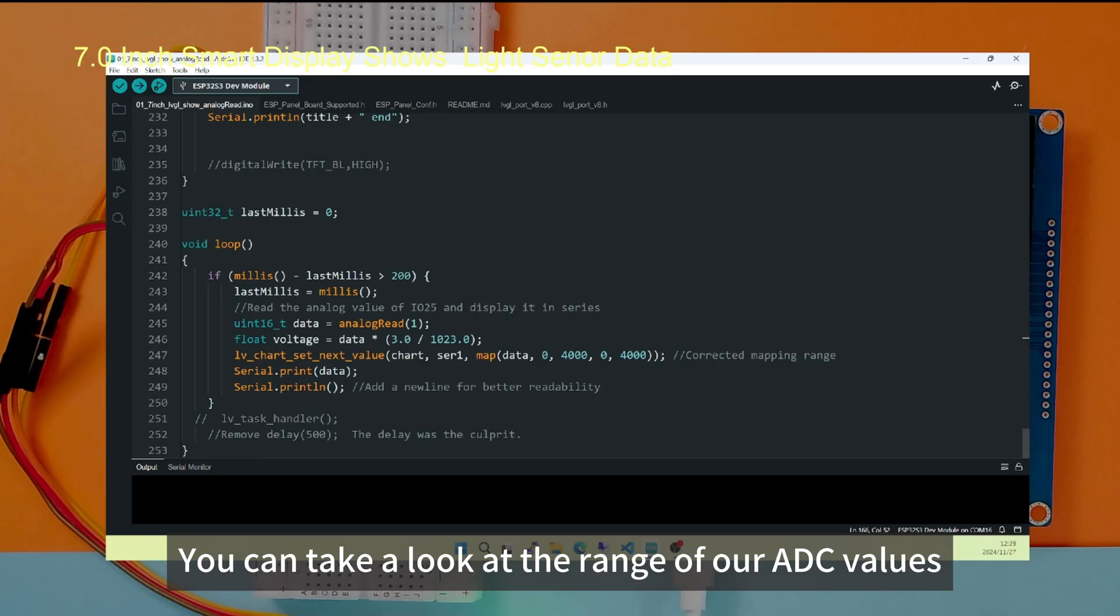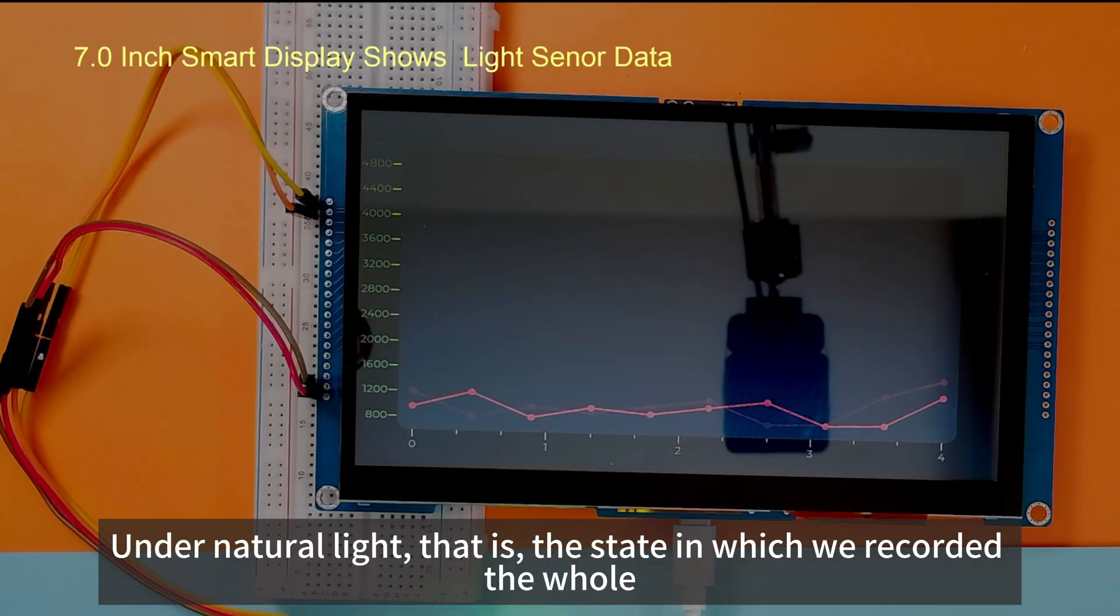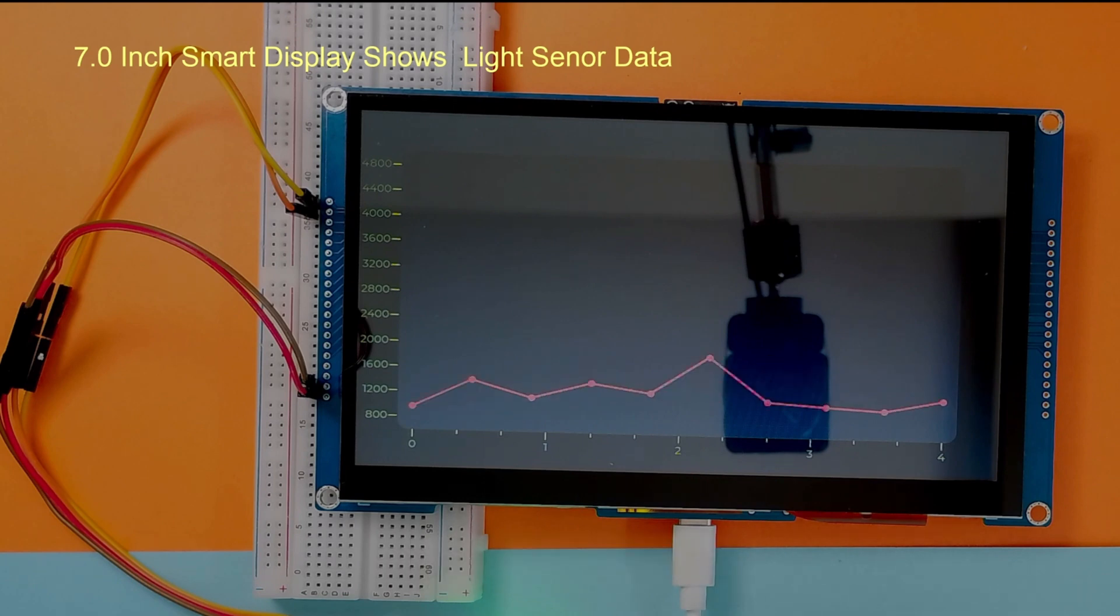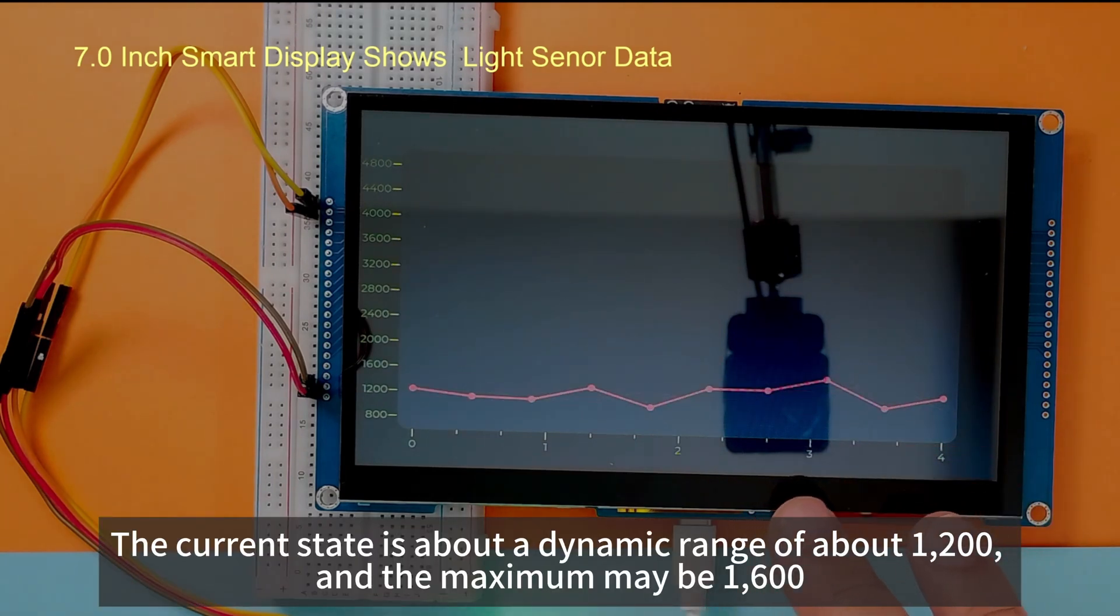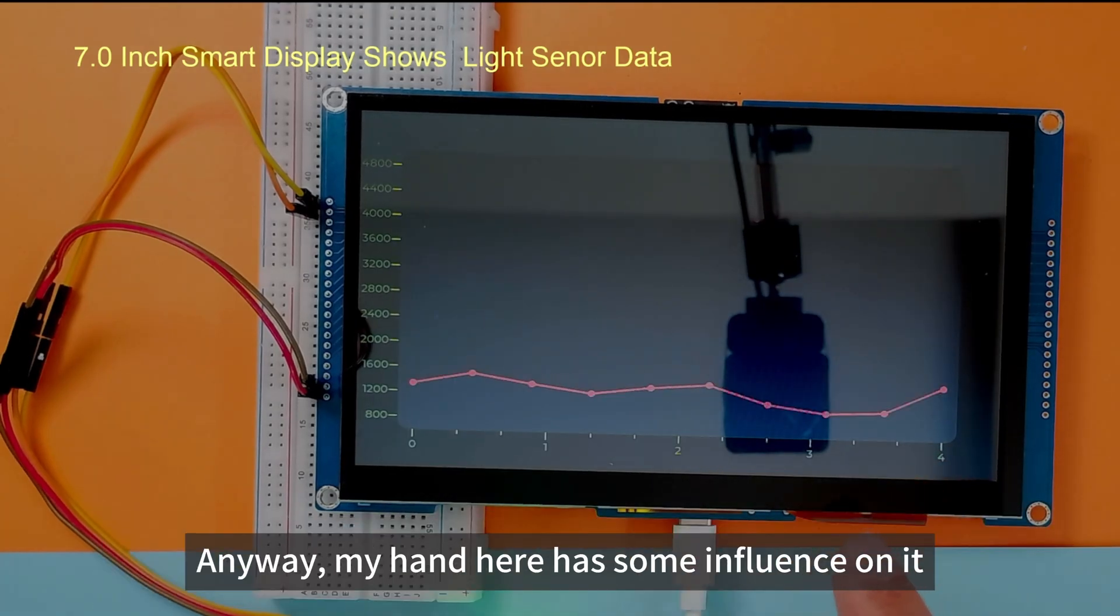You can take a look at the range of our ADC values. Under natural light, that is, the state in which we recorded the whole. We turned on a lamp. The current state is about a dynamic range of about 1200, and the maximum may be 1600.